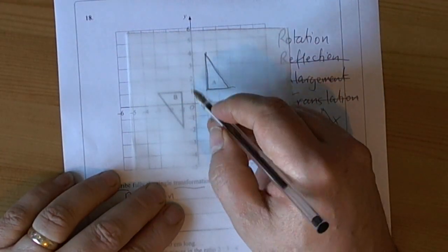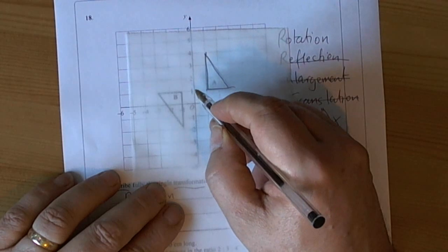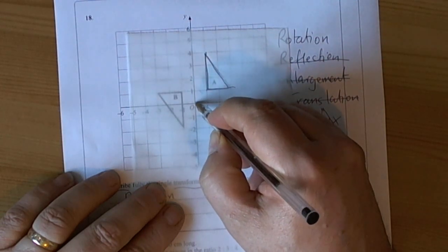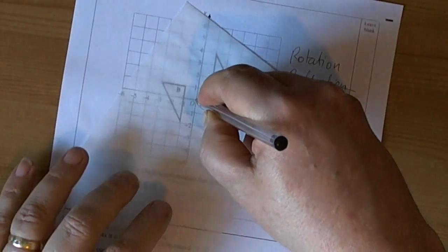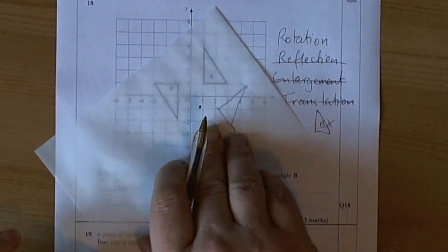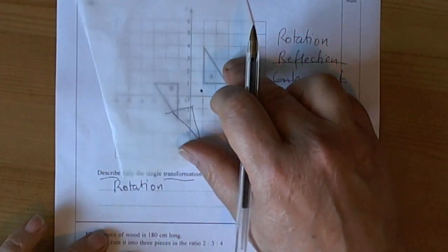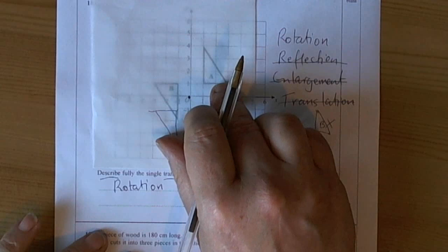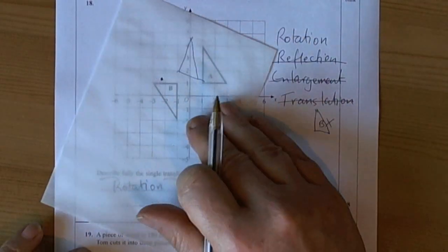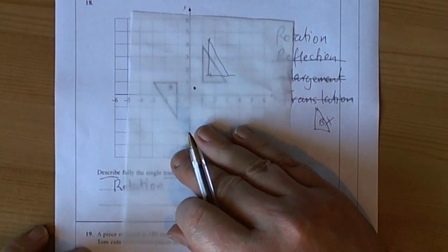Well, once we know it's a rotation, then we've got to decide using our tracing paper where the center of rotation is. So quite often it's going to be the origin, but we can see that when we spin this shape around the origin, it didn't quite work. So we're going to have to try somewhere different to the origin this time.